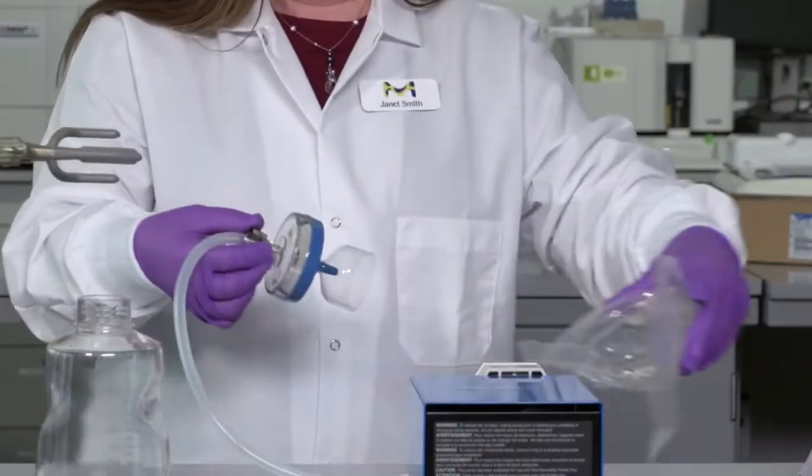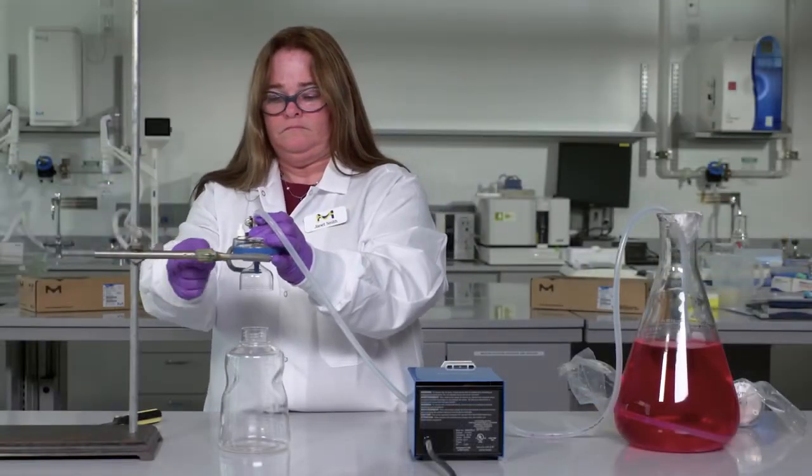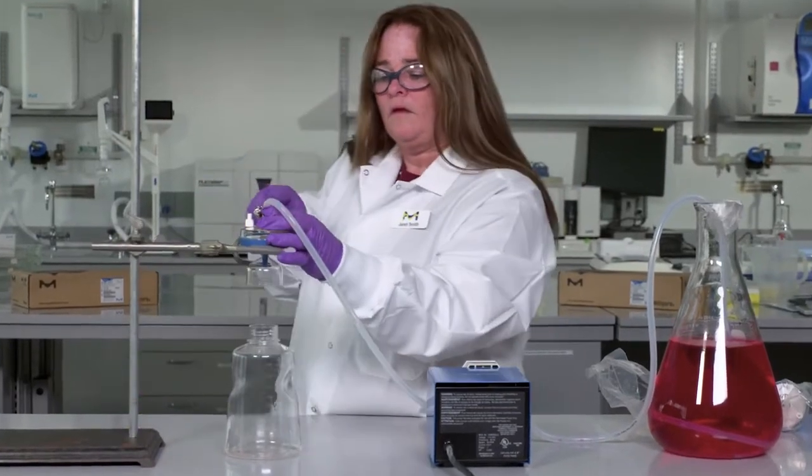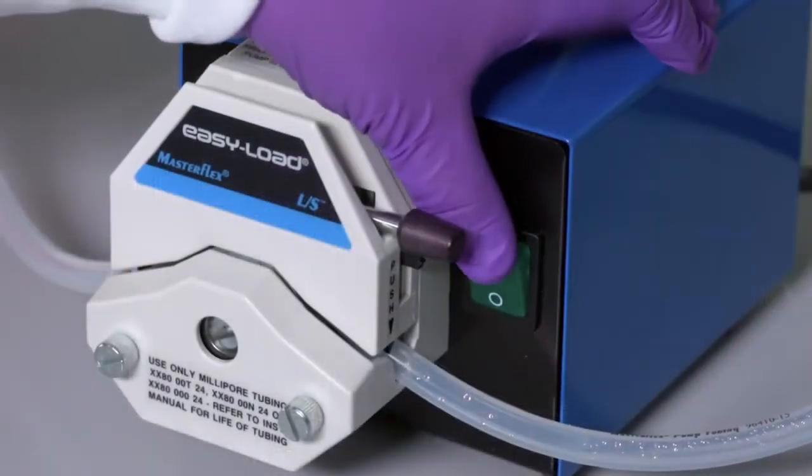Remove the unit from the blister pack, connect the unit to a ring stand, and place a sterile collection flask under it. Turn on the peristaltic pump.